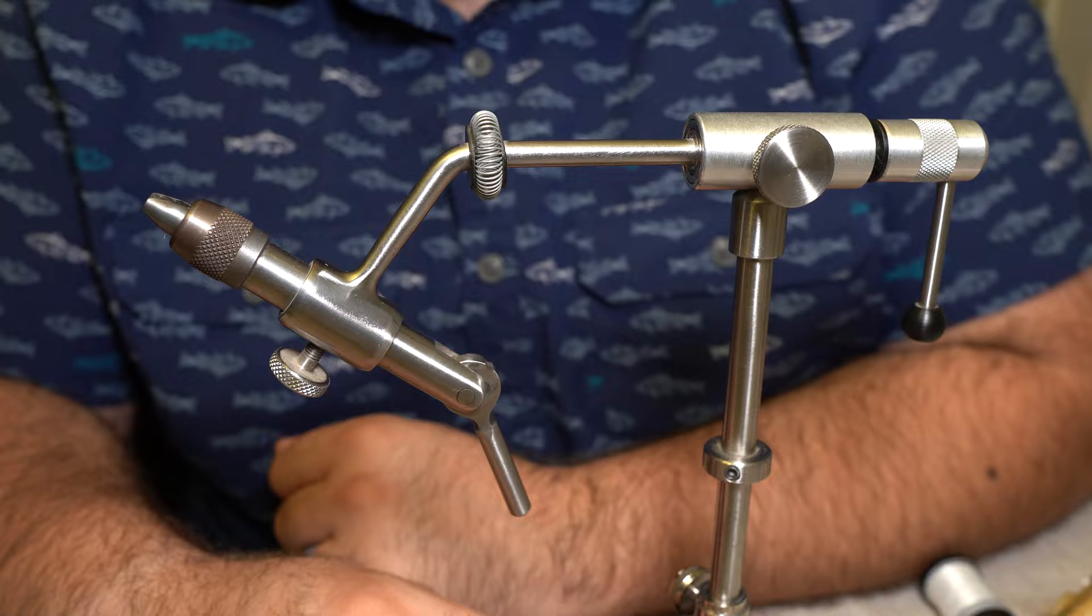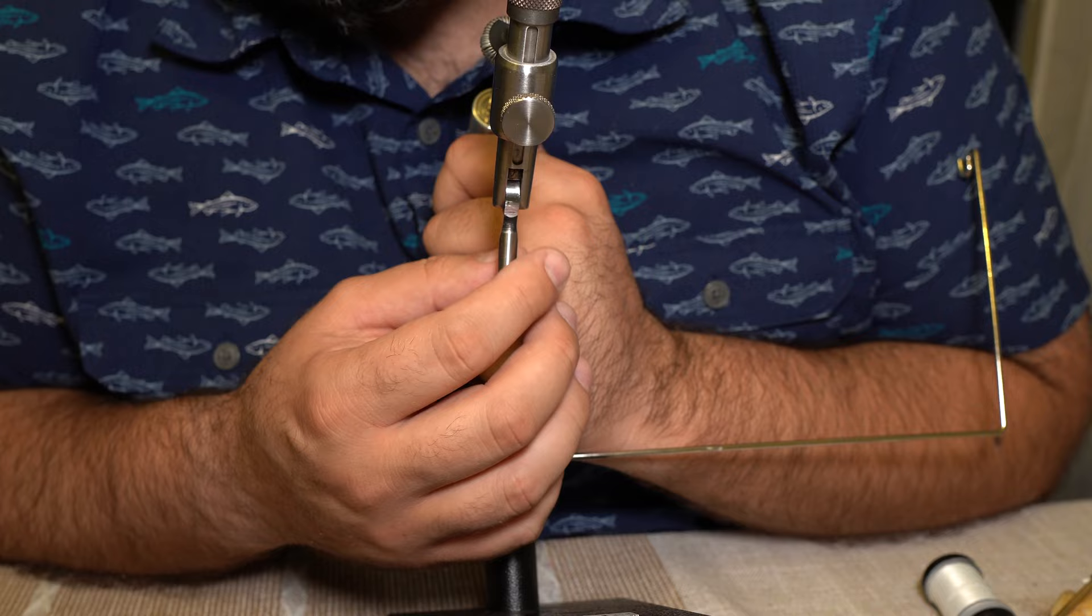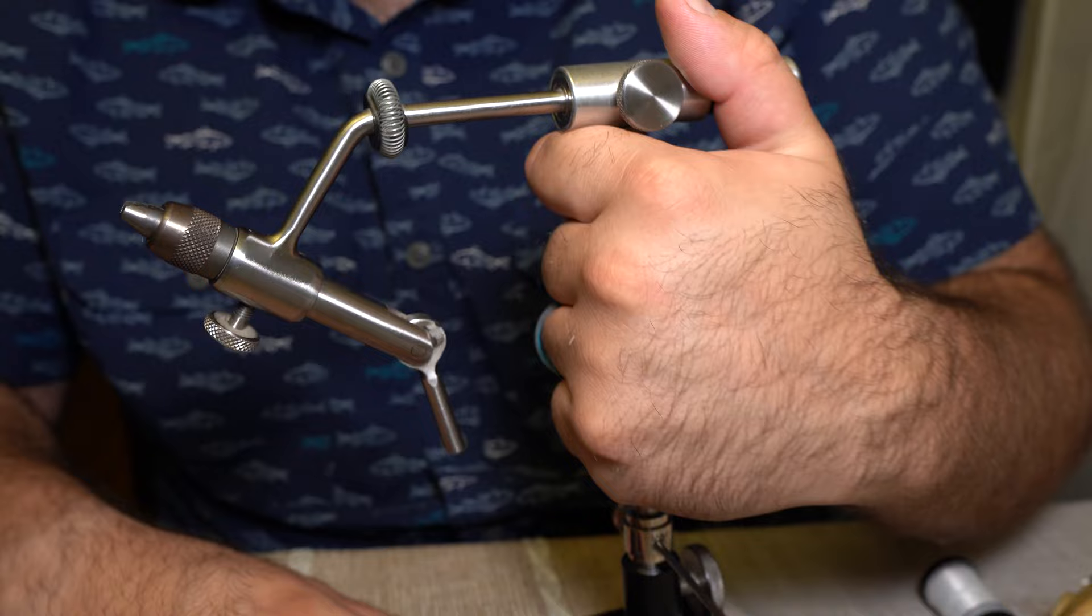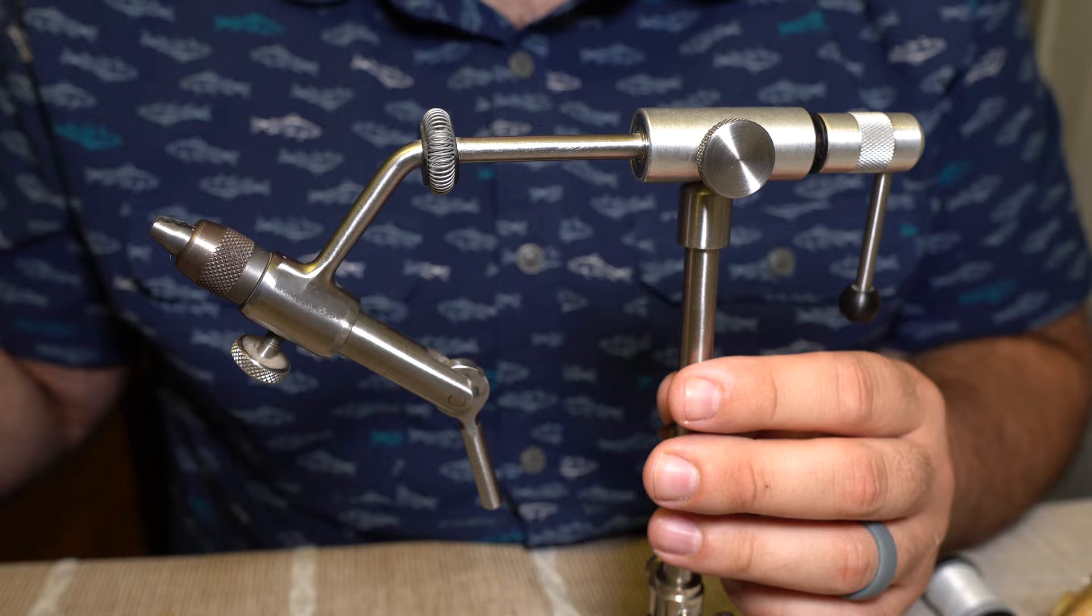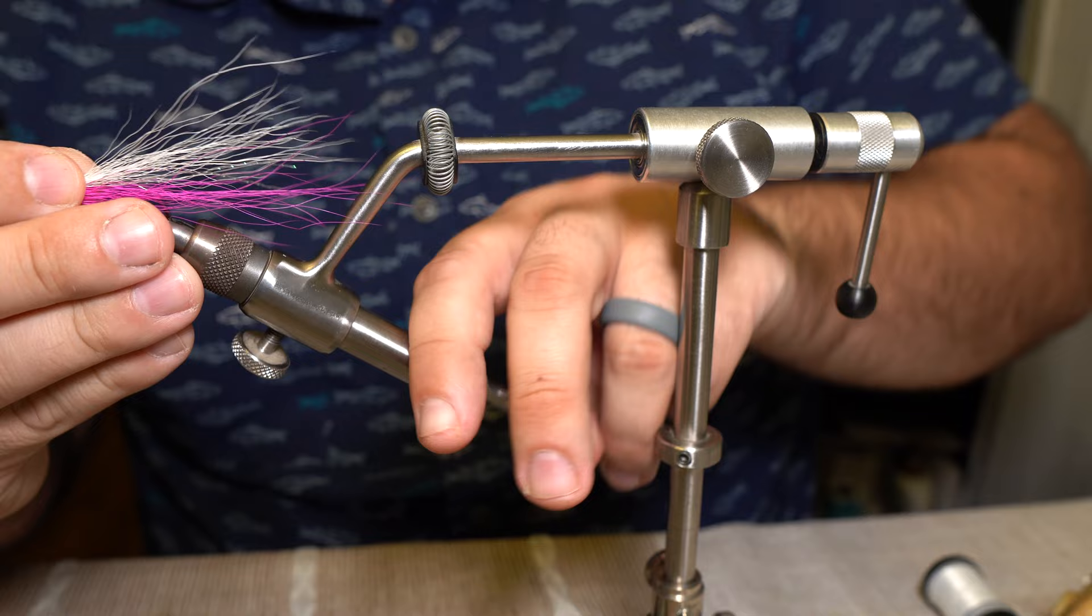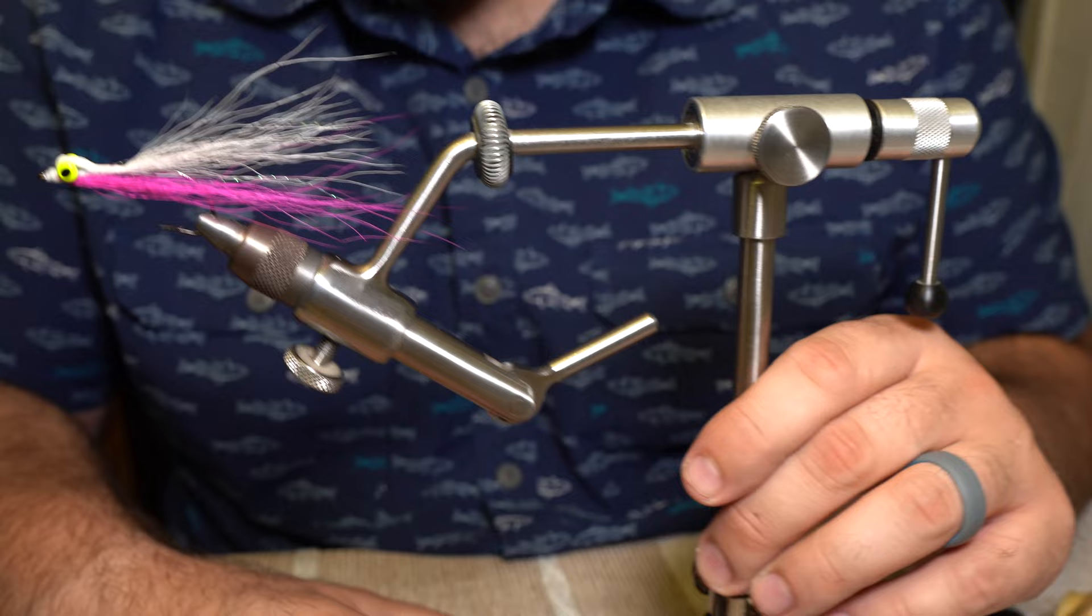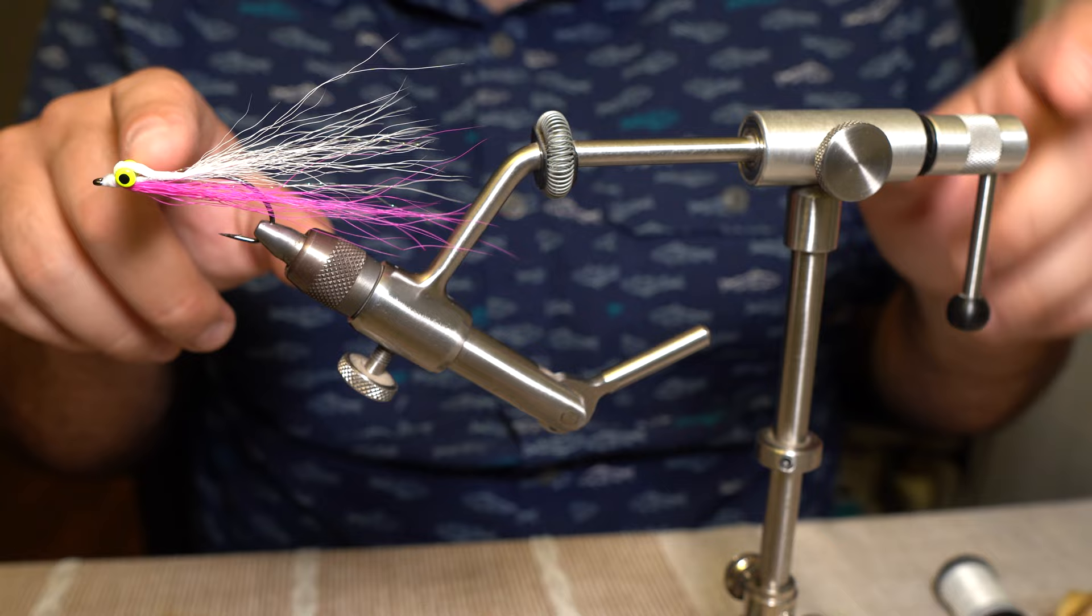Another setting. The bottom here, you can see there's a channel milled in the bottom of the actual jaws or the barrel that holds the jaws. So you can adjust the jaws up and down. You want to have the shank of the hook aligned with this shaft.